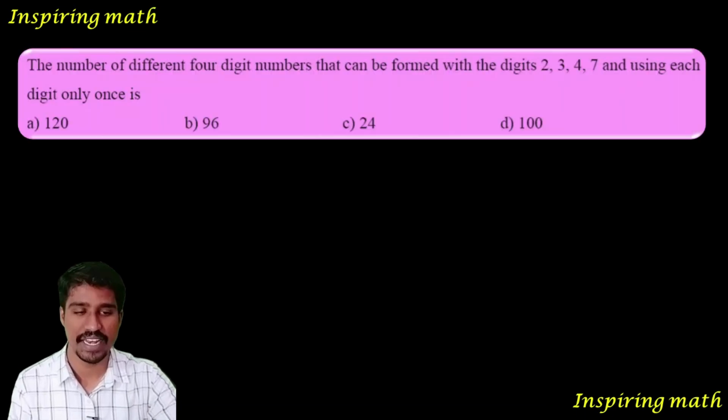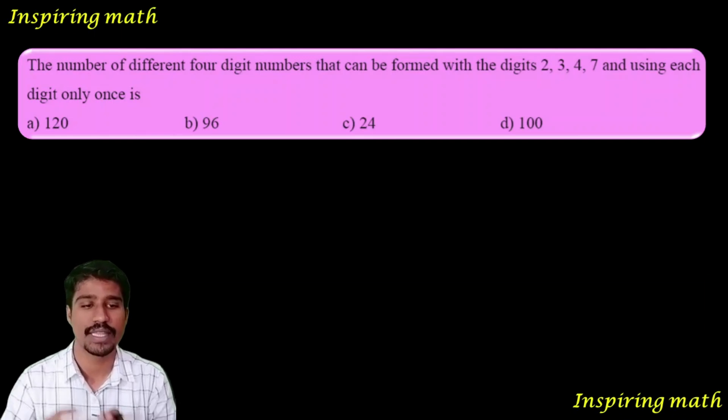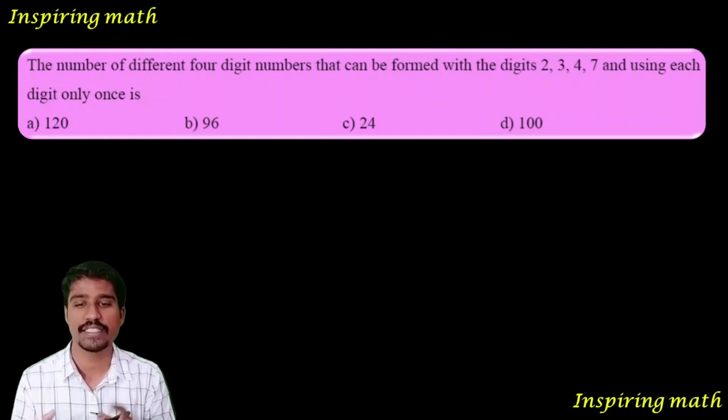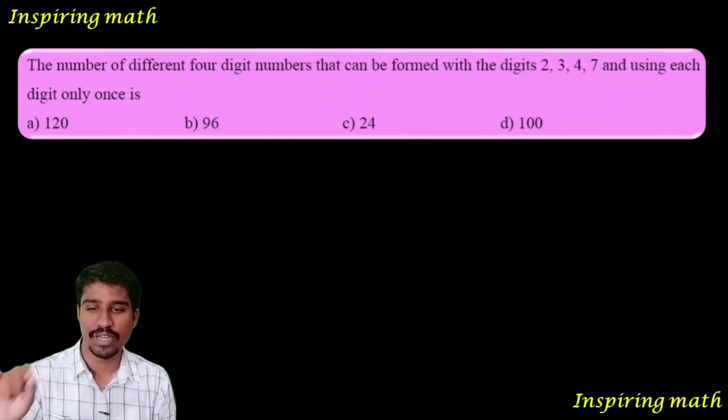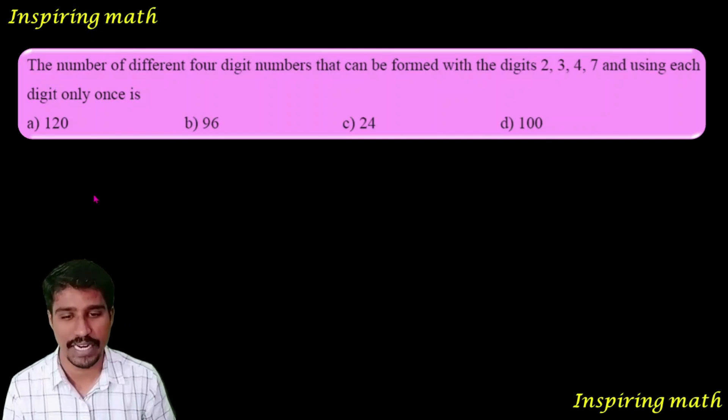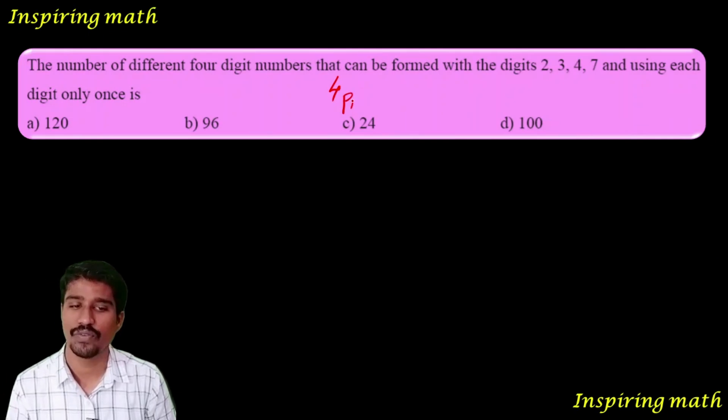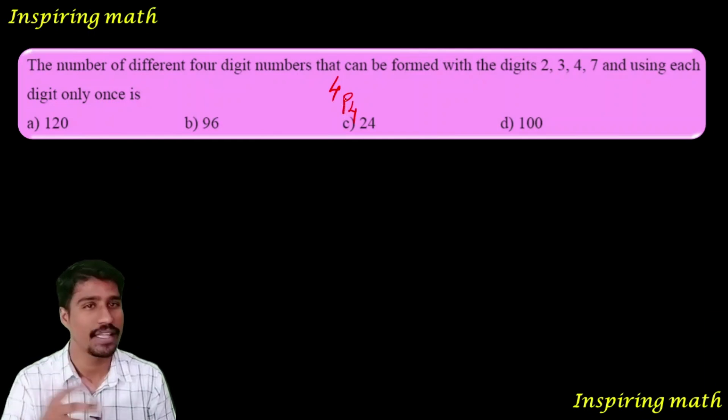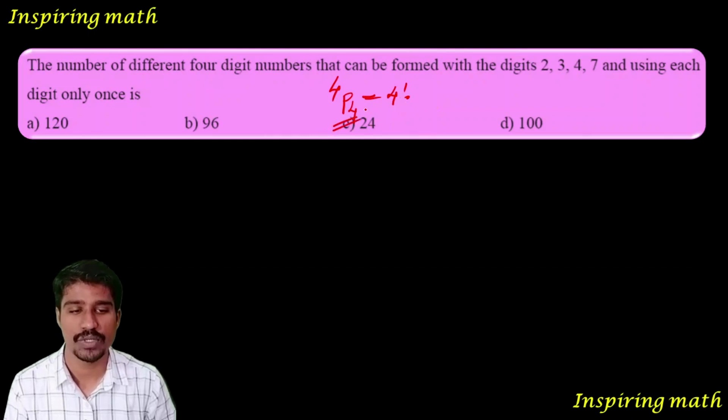The number of different four digit numbers that can be formed with the digits 2, 3, 4, 7, using each digit only once. Repetition is not allowed. Total number of objects is 4, so 4P4. Therefore option C is your answer.